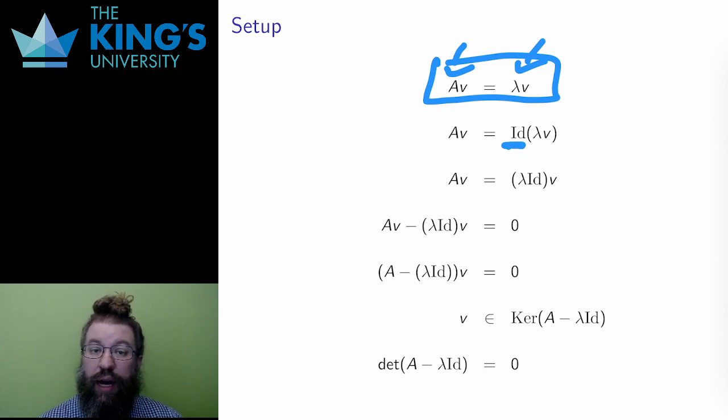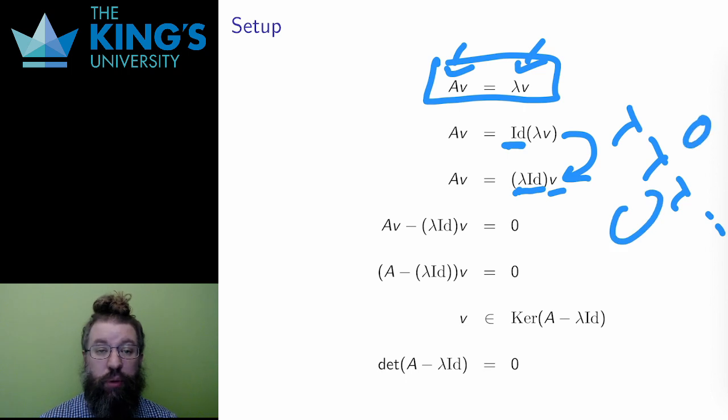However, I can pull the constant out by linearity. The right side, multiplying everything in v by lambda, is the same thing as the matrix lambda identity acting on v. Lambda identity is just a matrix with lambda all the way down the diagonals and zeros elsewhere. It just multiplies each component by lambda.